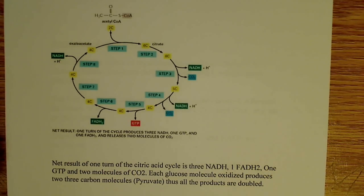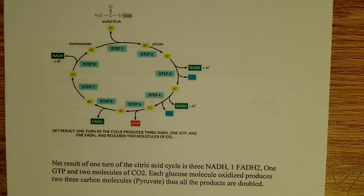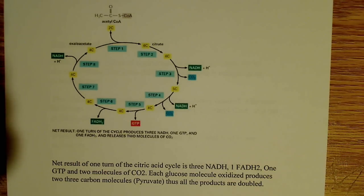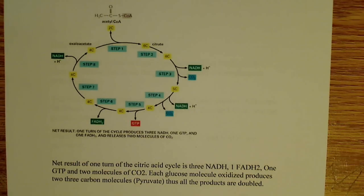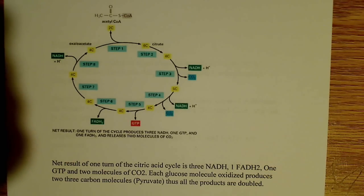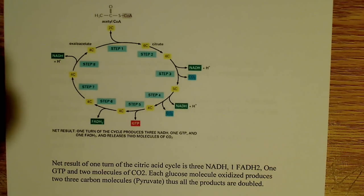In step seven, we convert fumarate to malate — that's a hydration, because we add water across a double bond, essentially adding two hydrogens. Fumarate is converted into malate by an enzyme called fumarase. In the final step, step eight, malate — a four-carbon molecule — plus NAD+ is converted to oxaloacetate. It winds up at the same place it began, which is why some people say the citric acid cycle acts as a catalyst. NAD+ is reduced to NADH, and that's catalyzed by malate dehydrogenase.